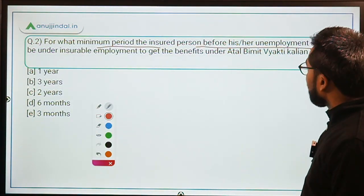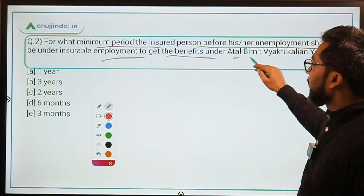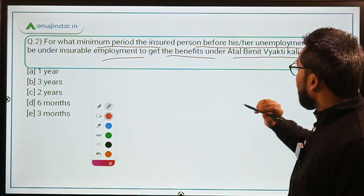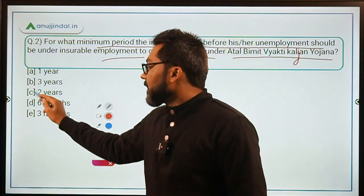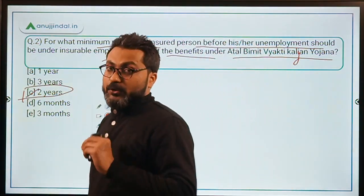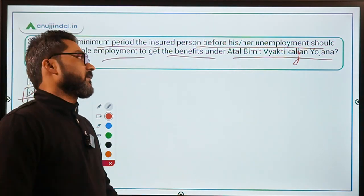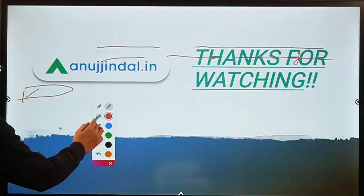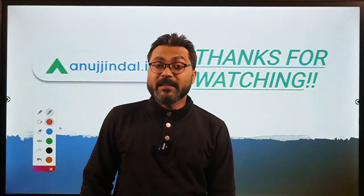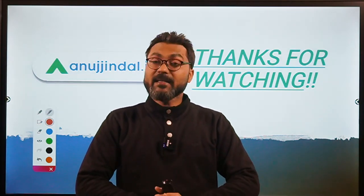Question number two: for what minimum period should the insured person be under insurable employment before unemployment to get benefits under Atal Bhimith Vyakti Kalyan Yojna? The answer is option C — two years. The person must have been in insurable employment for two years prior to be eligible for the scheme's benefits. I hope this scheme is clear. If you have any doubts, ask in the comment section. Thank you for watching!